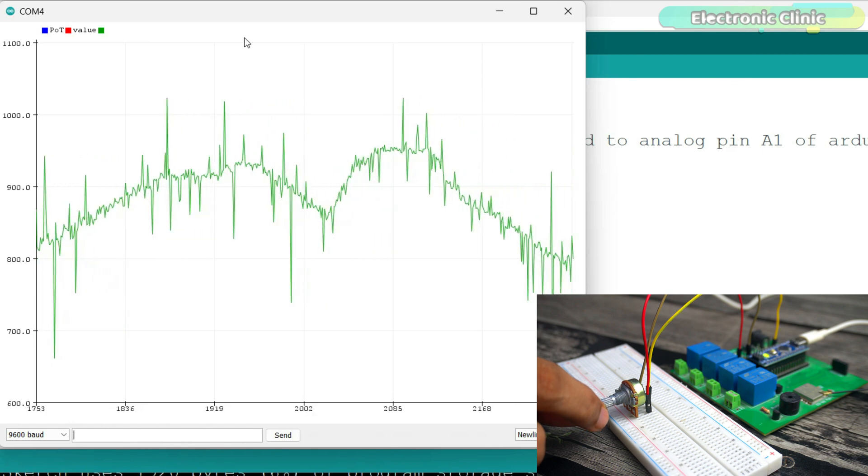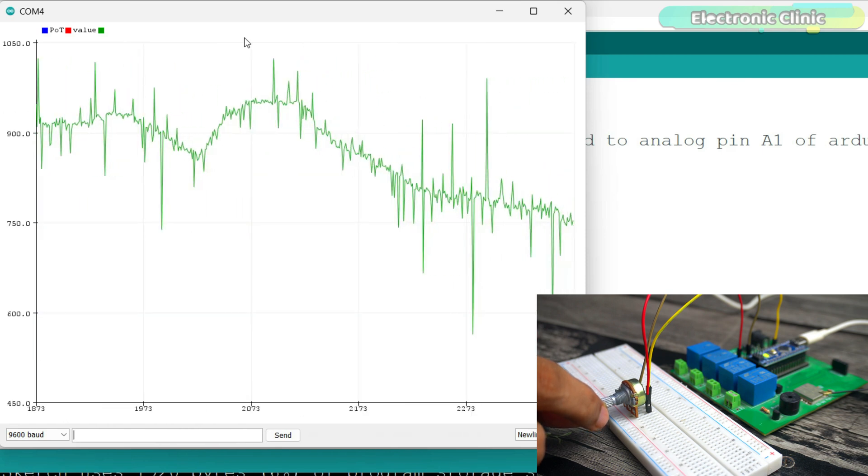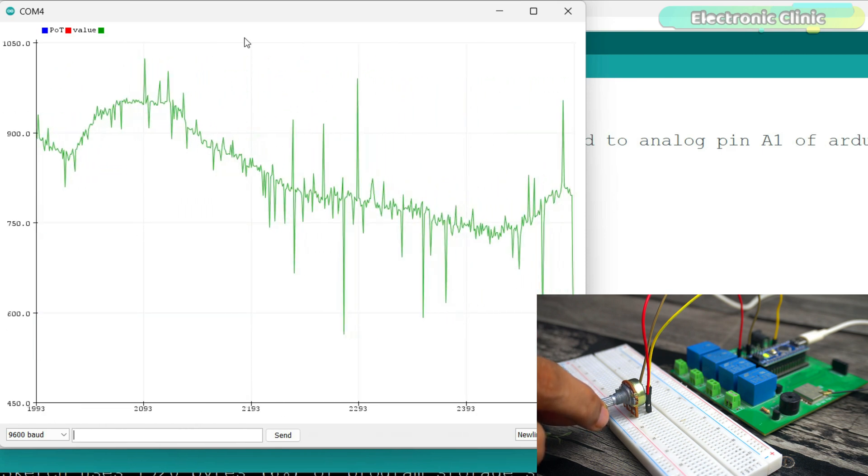To fix this problem, we need to smooth out the signal. This means making the readings more stable and less noisy.